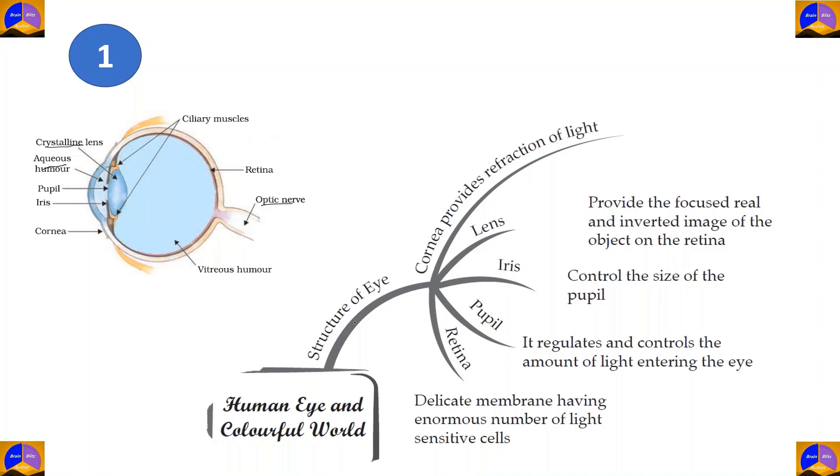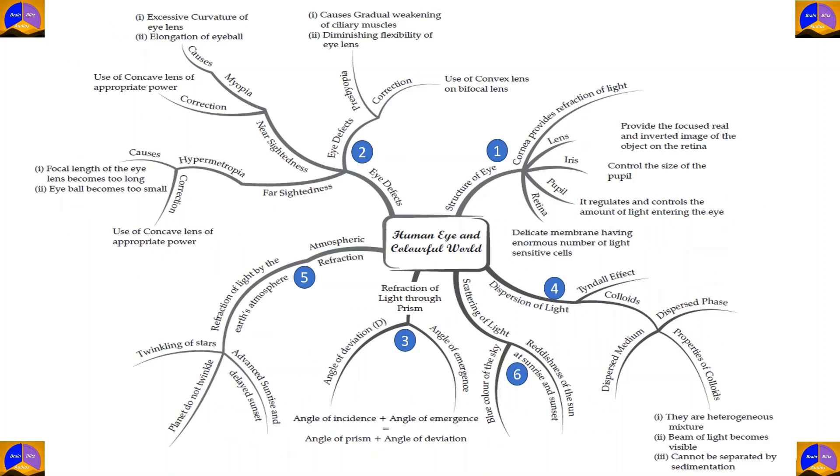Now, this is all that we need to know about the structure of the eye. Let's move on. From structure of the eye, we move on to the defects of the eye.